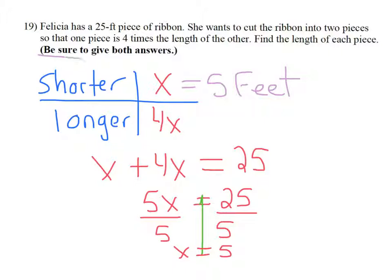I was asked to find both lengths. The longer piece is 4x the shorter or 4 times 5. 4 times 5 is 20. So the longer piece is 20 feet.